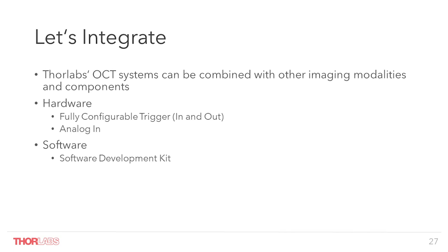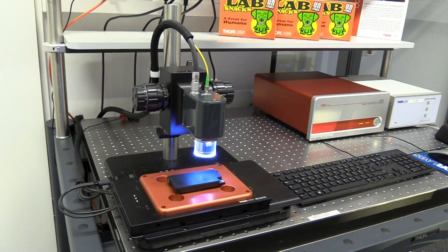Now a few words on versatility. It is really easy to use our hardware and software to combine an OCT system with other components or imaging modalities. In terms of hardware, we can read different trigger signals to drive image acquisition, or if needed our system can act as the master. There is also an analog input to read, for example, signals from a fluorescence channel, and this data can be visualized together with the OCT images.